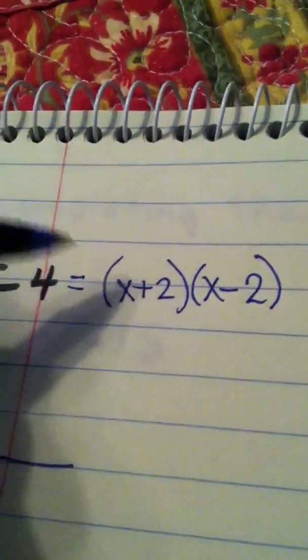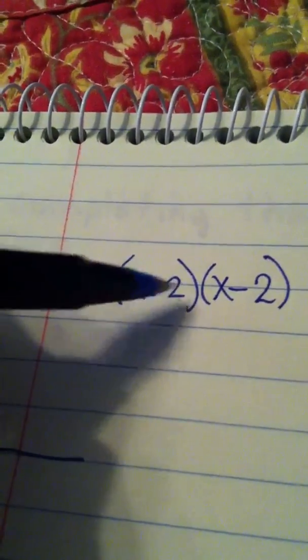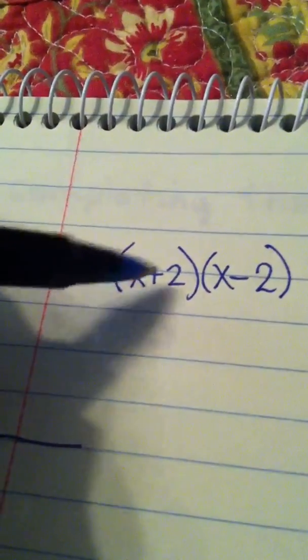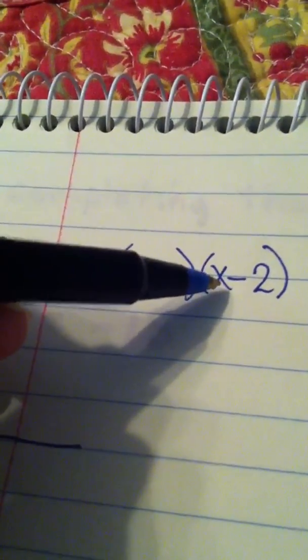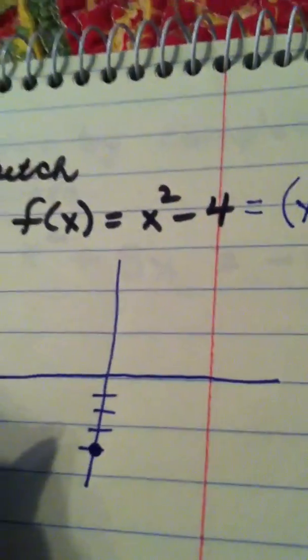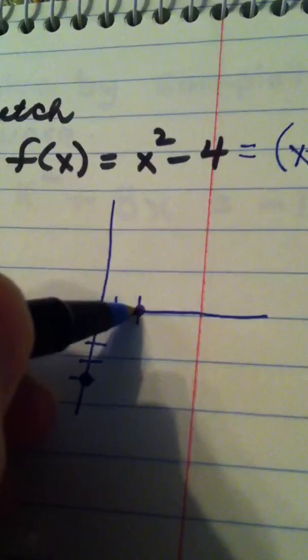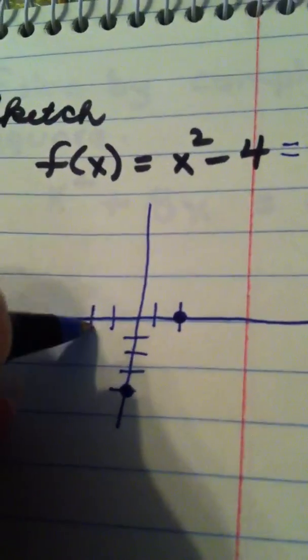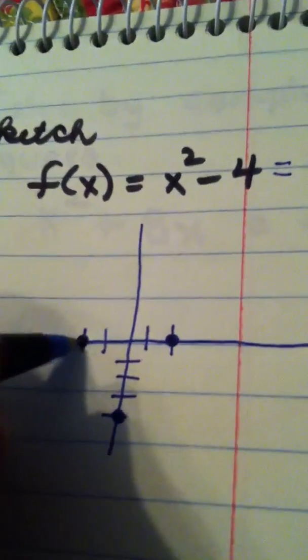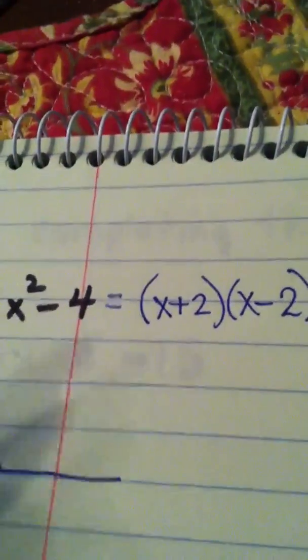it's very easy to see that this function becomes 0 when I plug in a negative 2 or a positive 2. So, that means the graph crosses the x-axis at 2, and it also crosses the x-axis at negative 2. And here's the reason behind that.